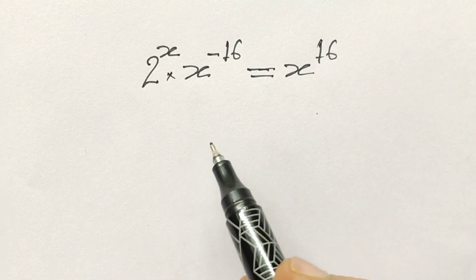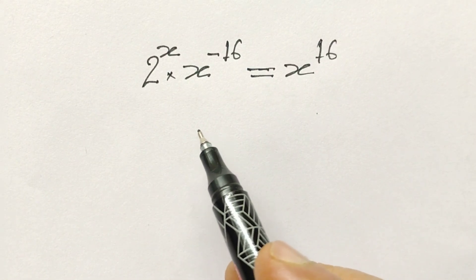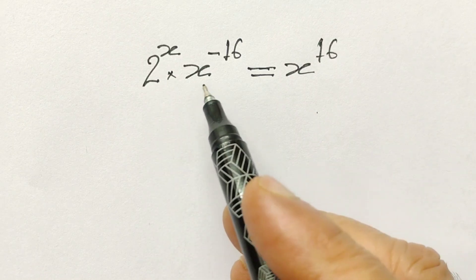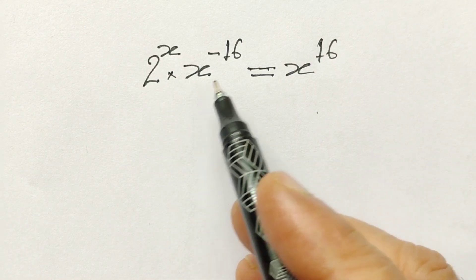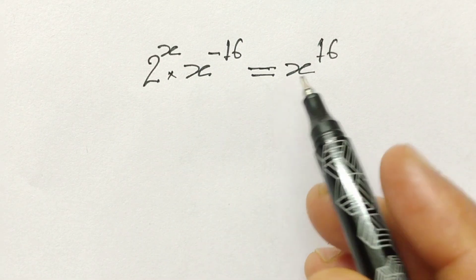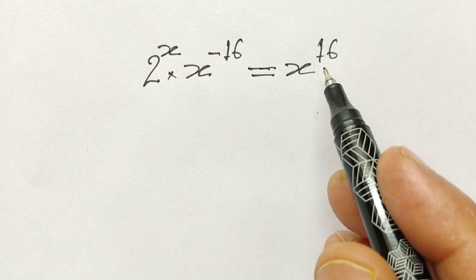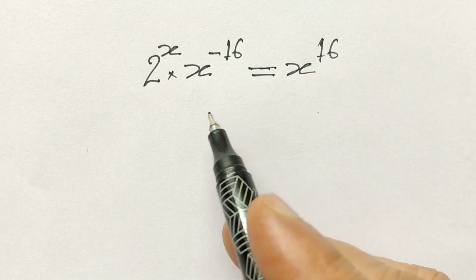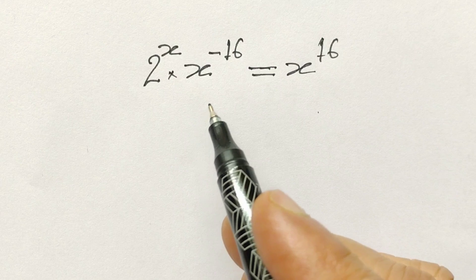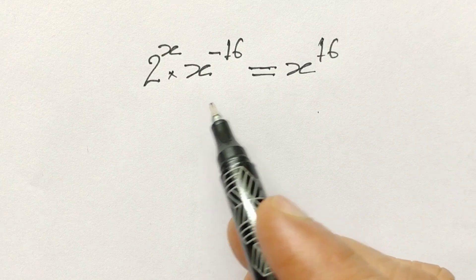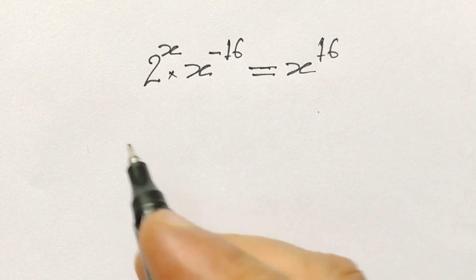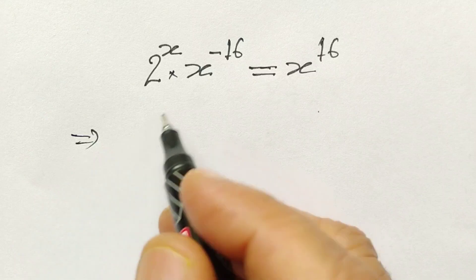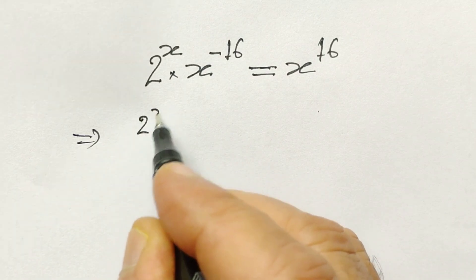Hi friends, welcome to my channel. Today we have a nice problem: 2 to the power x, into x to the power minus 16, is equal to x to the power 16. We have to solve this equation, or we can say we have to find out the value of x.